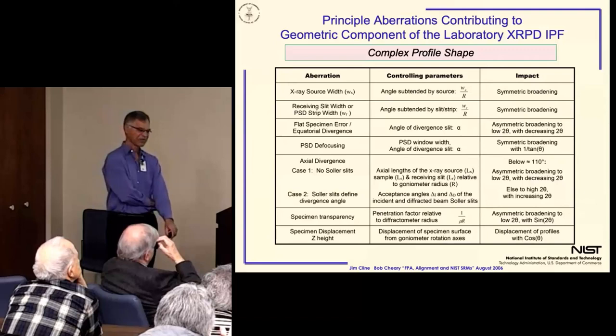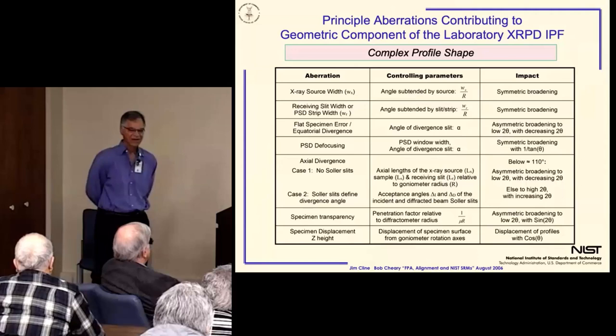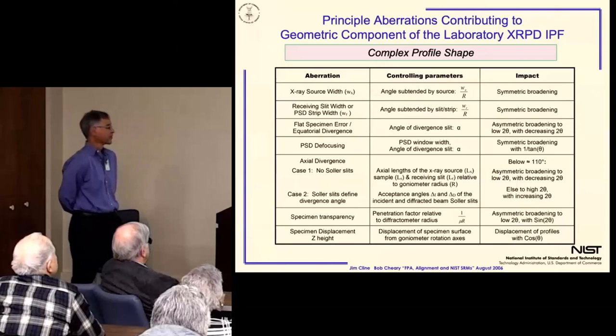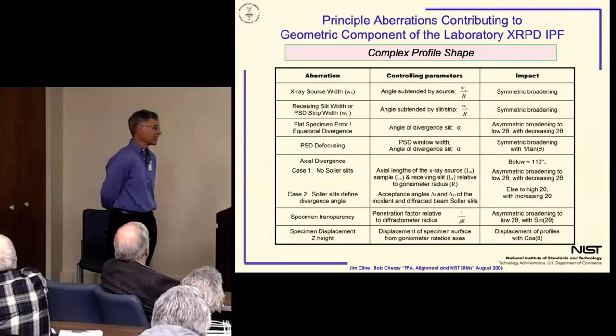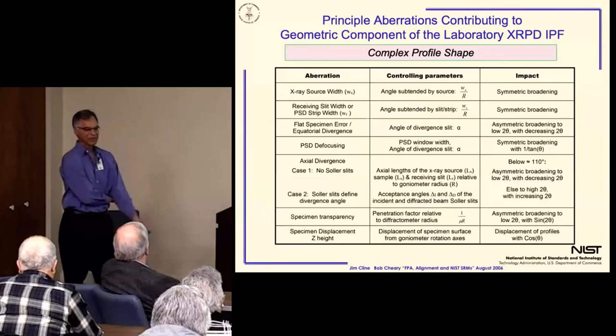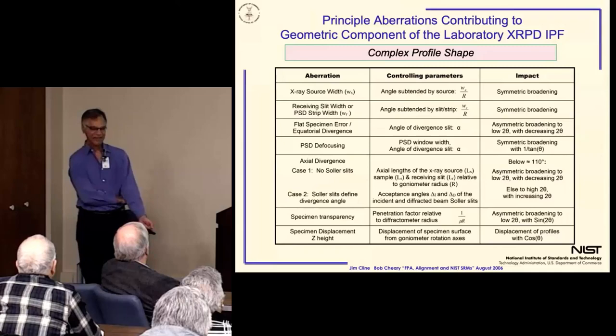This is a chart of the aberrations leading to the geometric component of the instrument profile function from the lab machine. These were mostly developed by Wilson and published in 1963. The axial divergence model is Chiri and Coleo, and the PSD defocusing is actually Marcus. So this is a modern chart, but the major premise is that all laboratory powder diffractometers, if evaluated using empirical methods for instrument characterization, should behave the same only as a function of the optical configuration. This may seem straightforward now, but in fact, this was in opposition to particularly the senior membership of the American community.